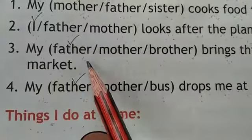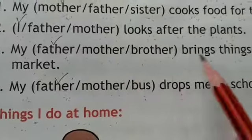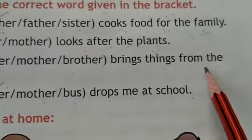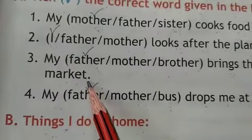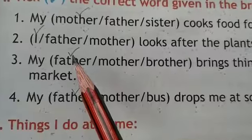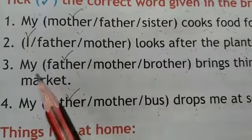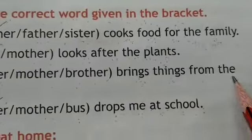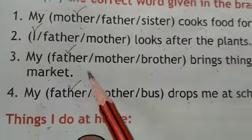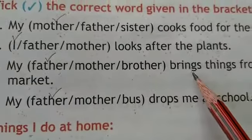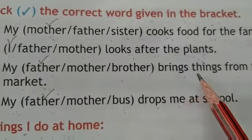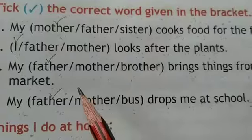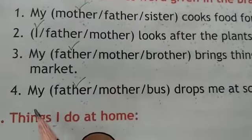Third is: my — options are father, oblique mother, oblique brother — brings things from the market. According to your chapter, we will take father. My father brings things from the market. Brings hota hai, lana. Woh market se le ke aate hain.